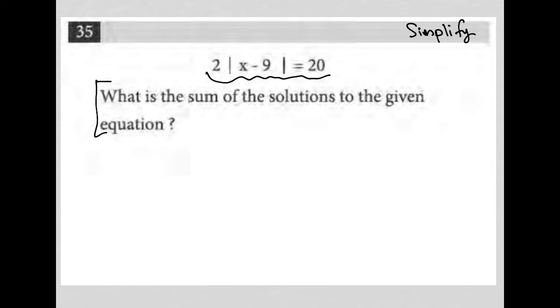The question says, what is the sum of the solutions to the given equation? Solutions plural, so we know we're going to expect more than one solution. Here's the equation: 2, absolute value, x minus 9, close absolute value, equals 20.